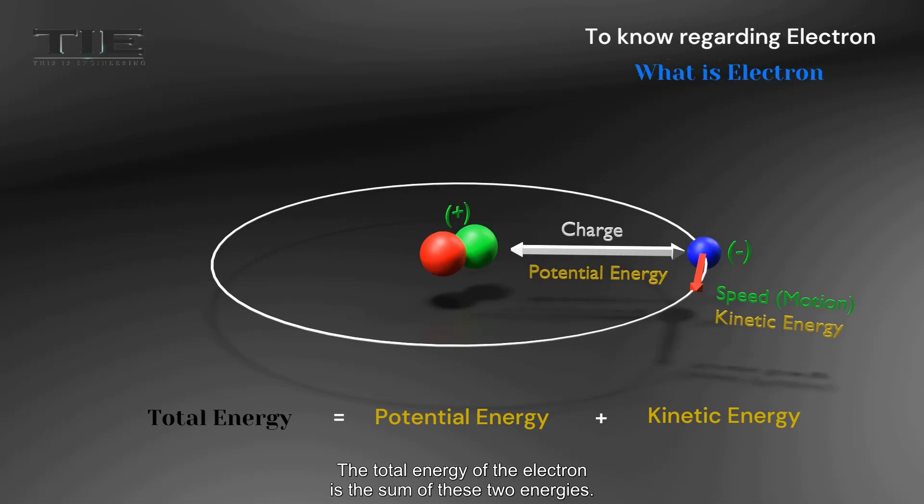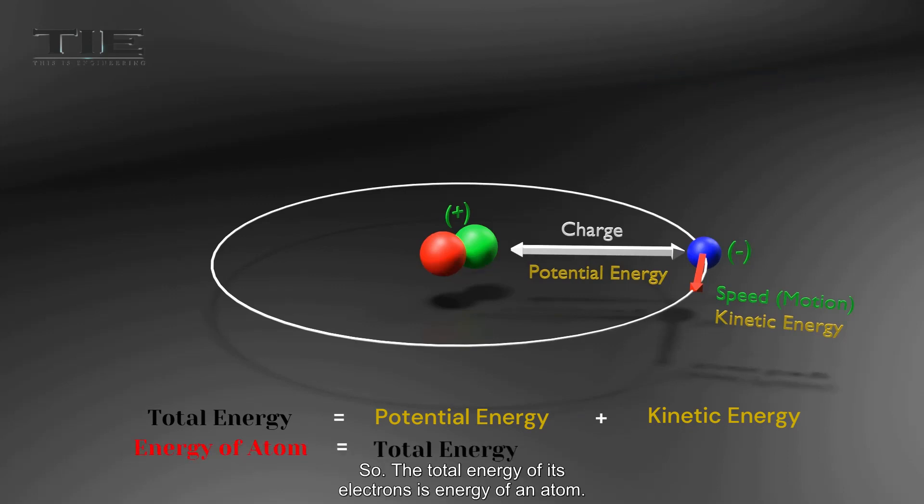The total energy of the electron is the sum of these two energies. The total energy of its electrons is energy of an atom.